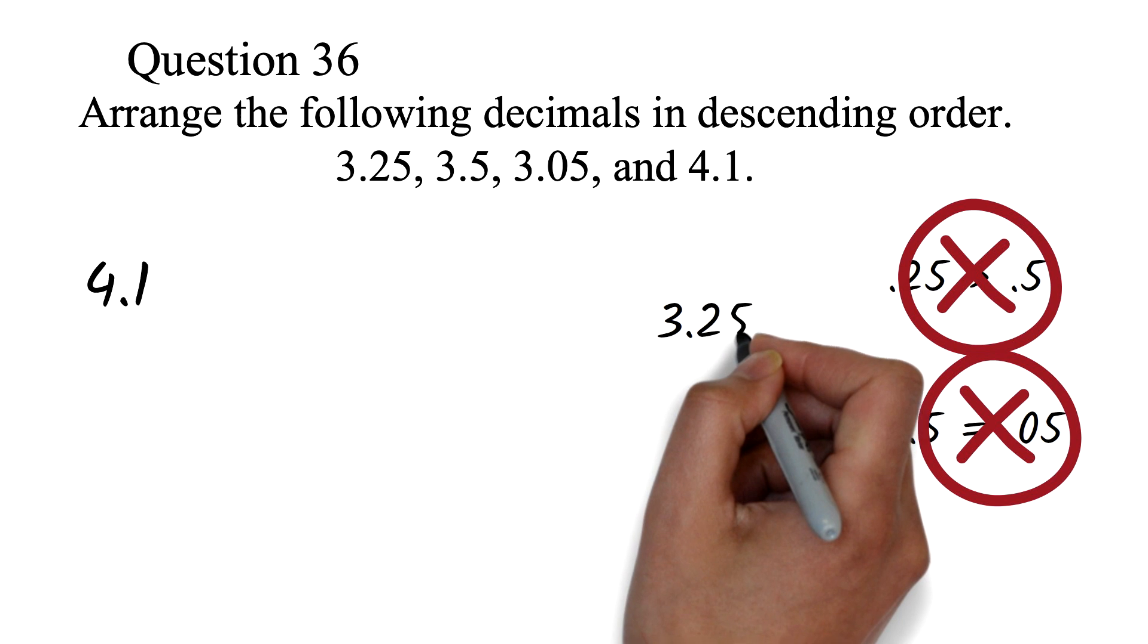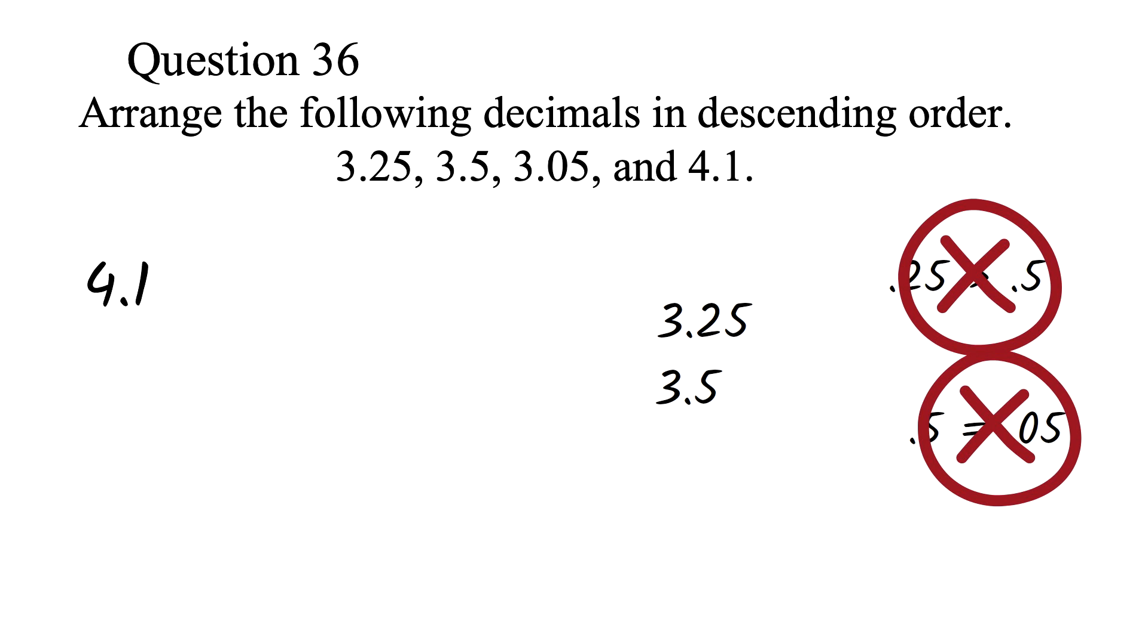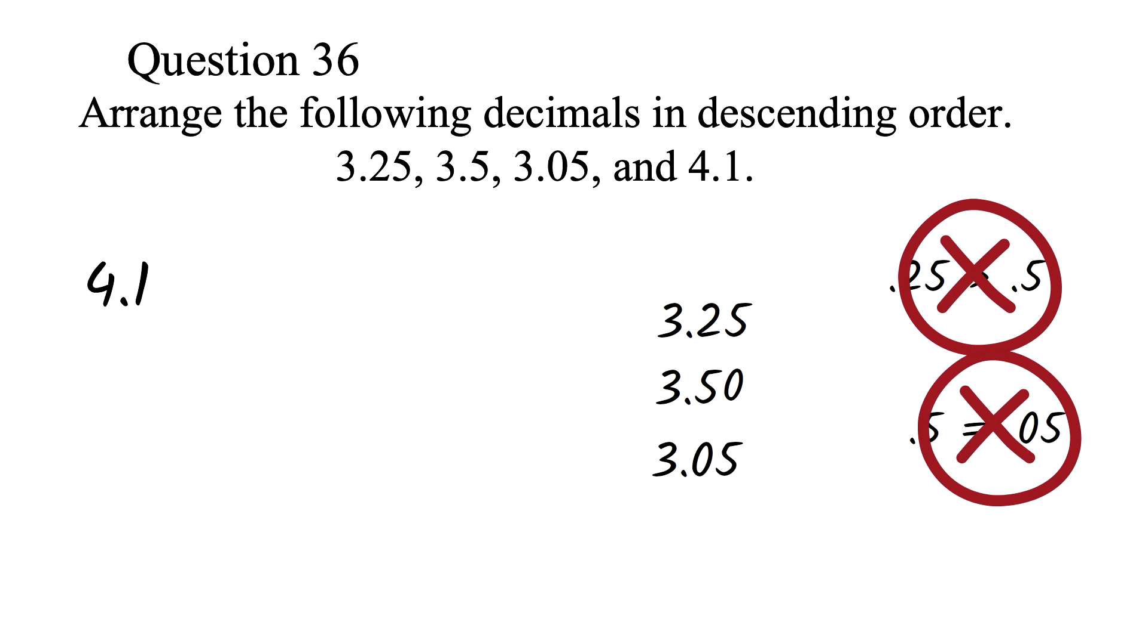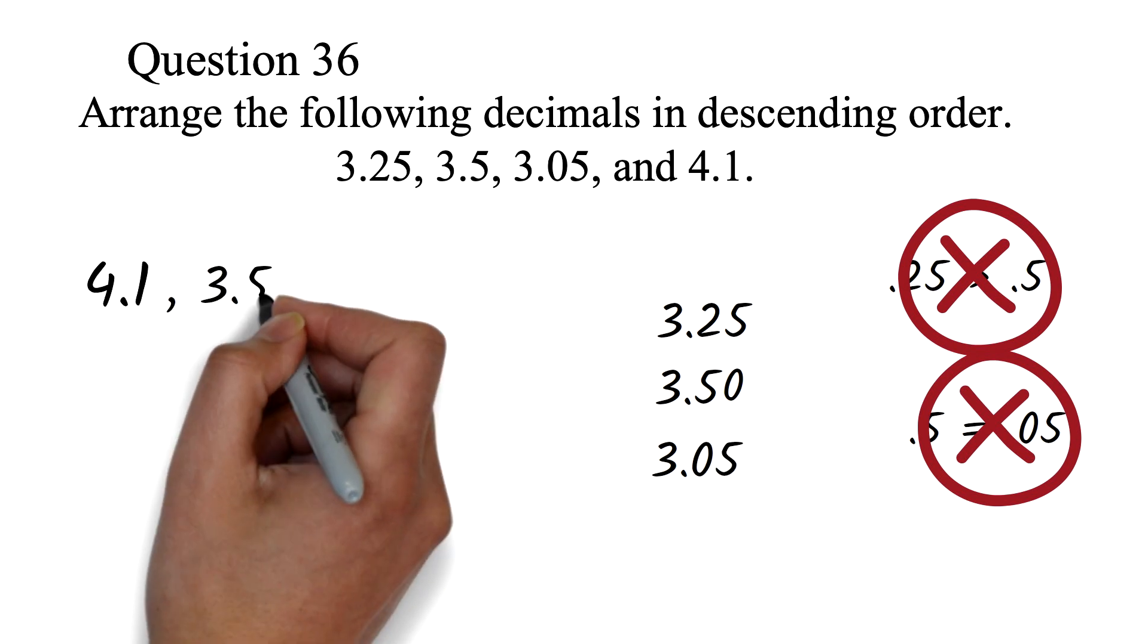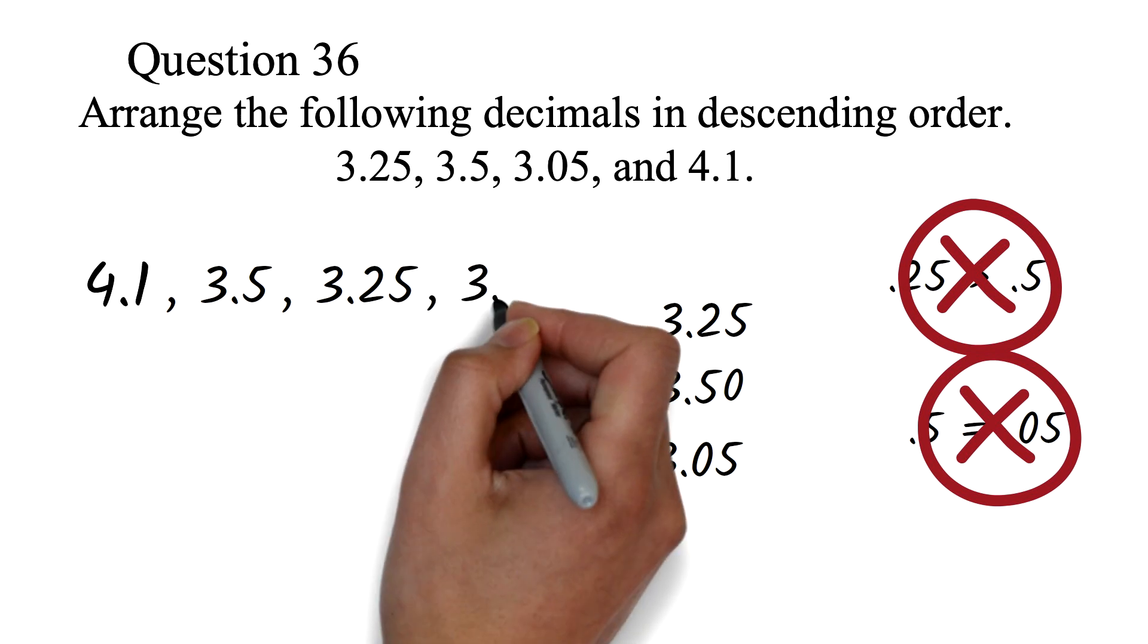3.25 has two digits after the decimal point. 3.5 has only one digit. We can make it two digits by adding 0 as we learned in the previous question. So we have 3.50. Then we have 3.05 which has two digits. With this we can see that 3.50 is the next in descending order. Then 3.25. Then finally 3.05.